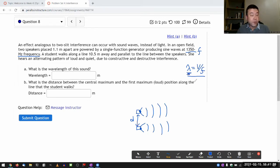It says the student walks along a line 10.5 meters away. I really hope the wavelength, when you work it out, is much smaller than this, so that you can use the small-angle approximation - all the things we take for granted for double-slit interference.